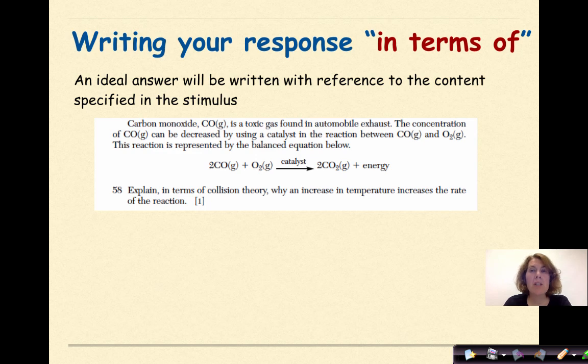Writing your response in terms of. In terms of answers are really important to understand how to approach. An ideal answer will be written with reference to the content specified in the stimulus. Let's look at an example. Carbon monoxide is a toxic gas found in automobile exhaust. The concentration of CO can be decreased by using a catalyst in the reaction between carbon monoxide and oxygen. This reaction is represented by the balanced equation below. Explain, in terms of collision theory, why an increase in temperature increases the rate of the reaction.